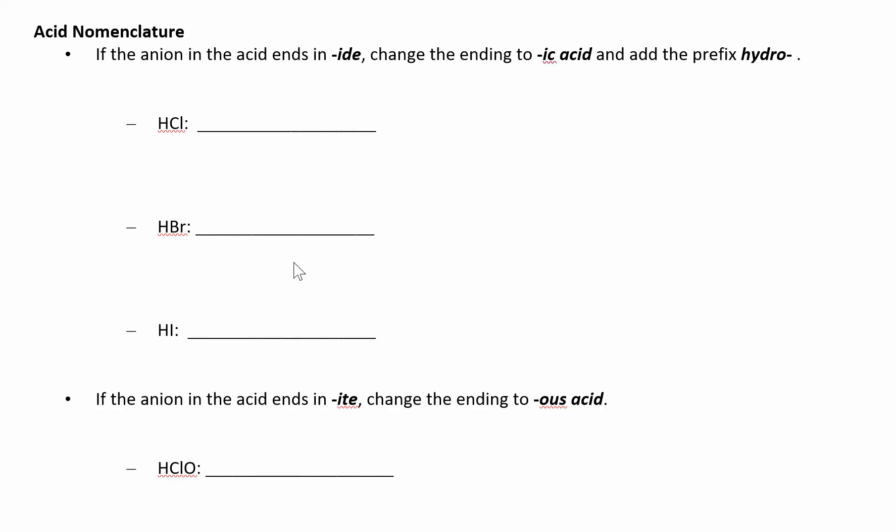Alright, so our next thing we're going to name are acids. Acids really just have hydrogen with something else attached to it. Hydrogen is usually written out in front. We'll see a couple times where if we have a carboxylic acid, the hydrogen that comes off is going to be at the end. But acids - whenever you see hydrogen out in front, think that's an acid.